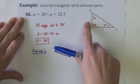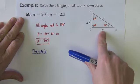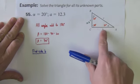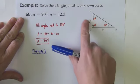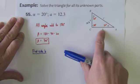the side that I know is opposite. The side that I'm looking for is adjacent. Which of the three original trig functions would use opposite and adjacent? And the answer is tangent.